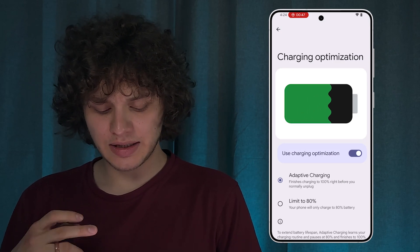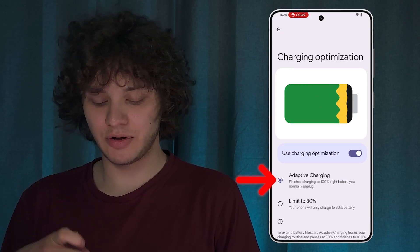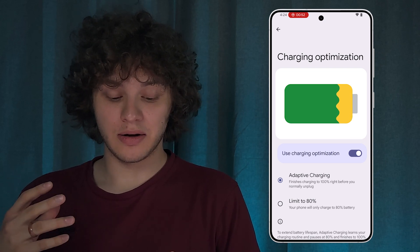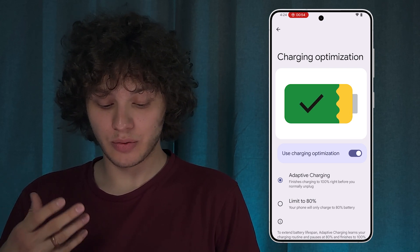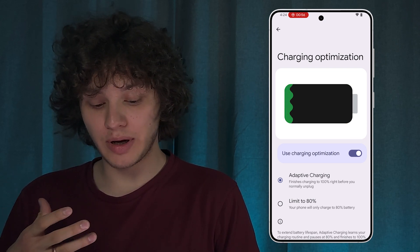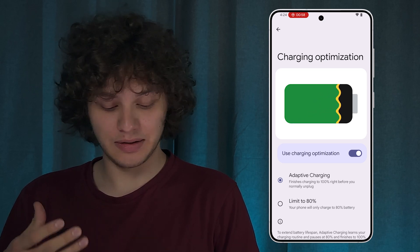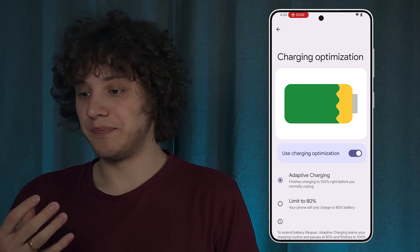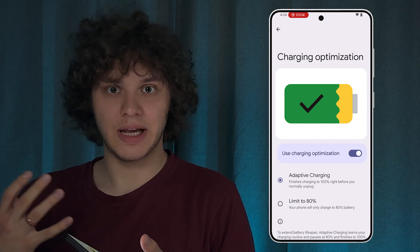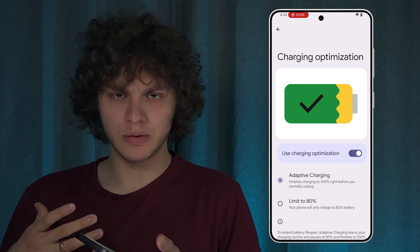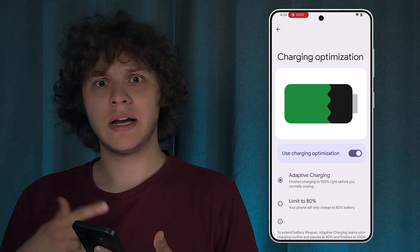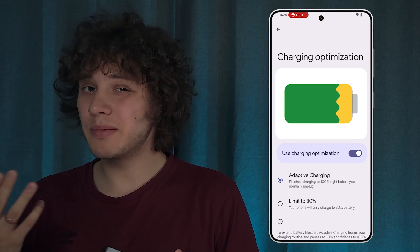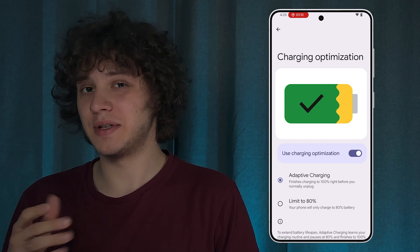I recommend tapping on Charging Optimization and enabling Adaptive Charging — usually it's enabled by default. Your phone will finish charging to 100% only when it realizes you'll unplug it soon. All modern phones have smart charging enabled by default.